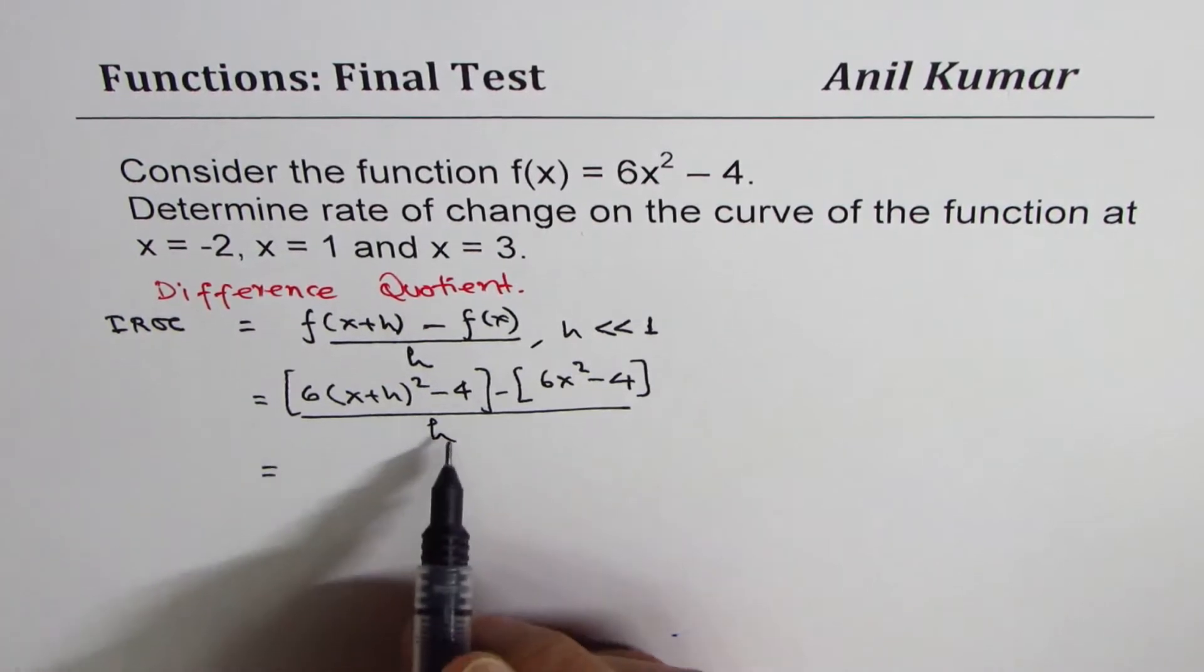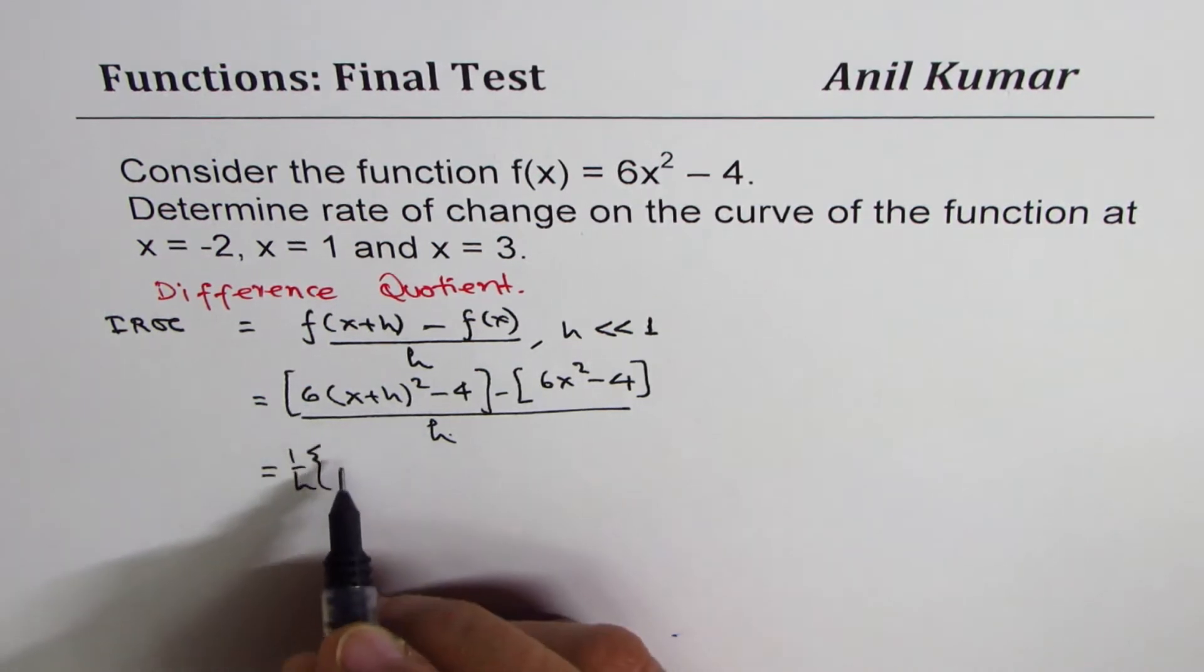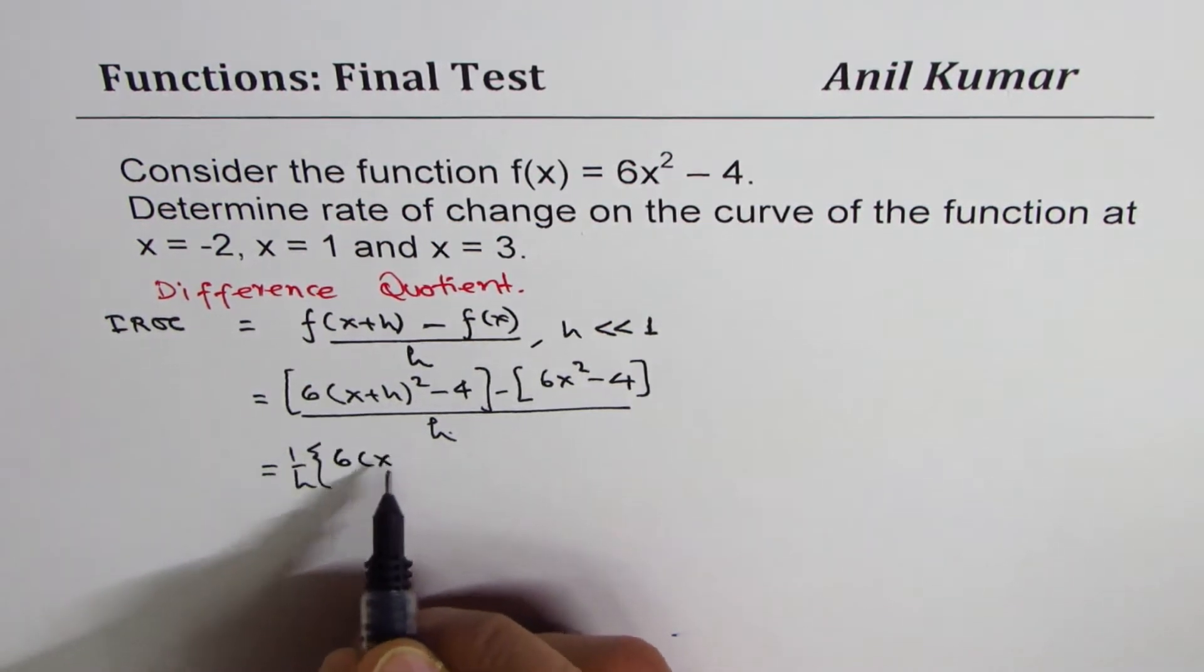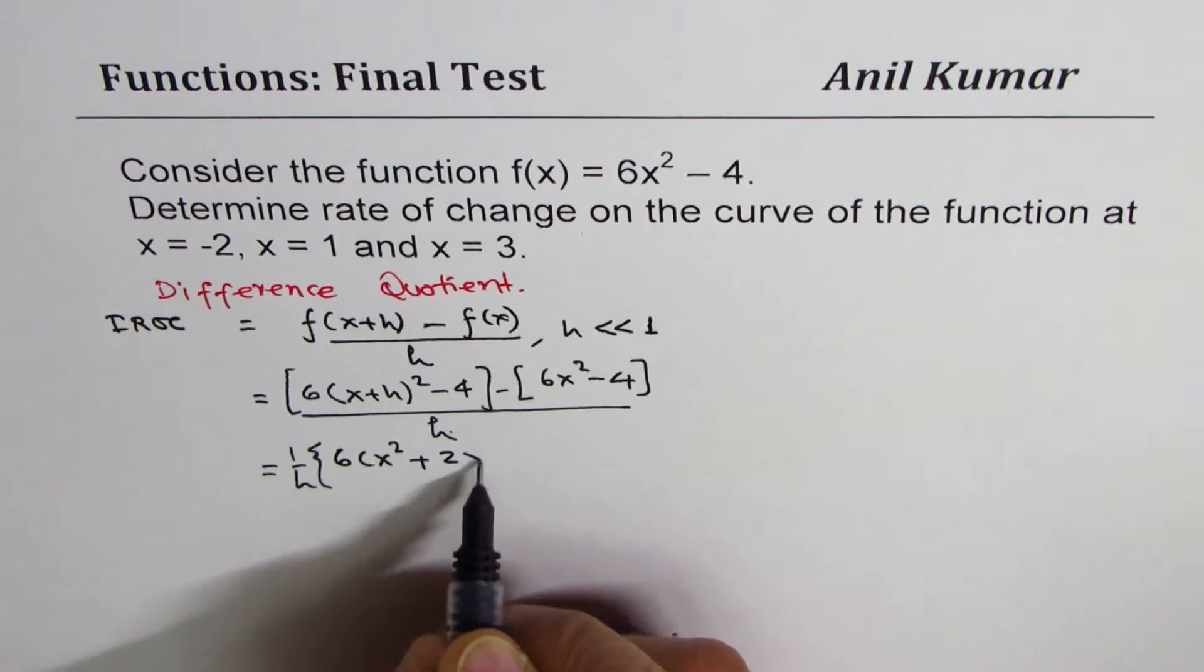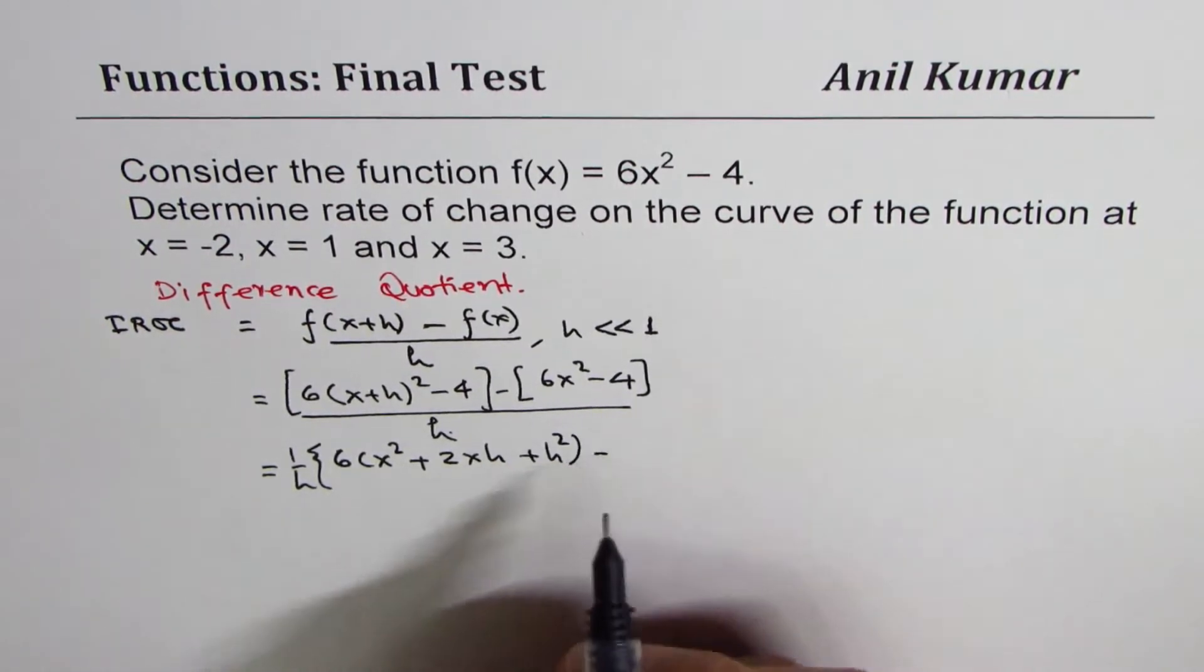Which is equal to, we can write 1/h here, and in the brackets, let's open this bracket now. So we get 6(x² + 2xh + h²), minus 4.